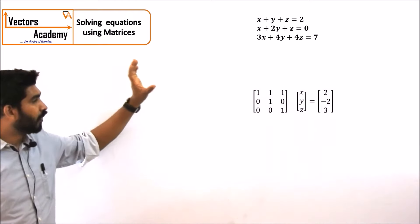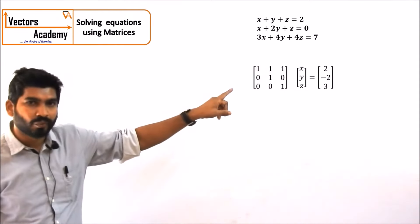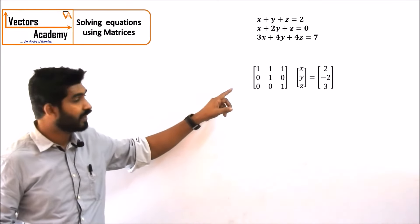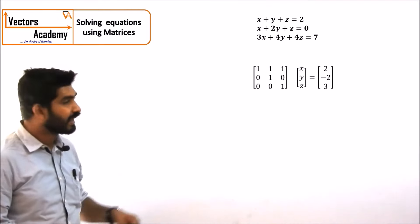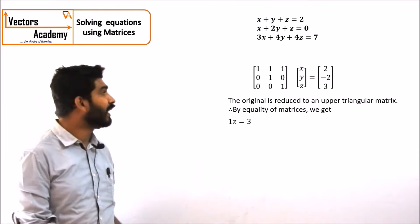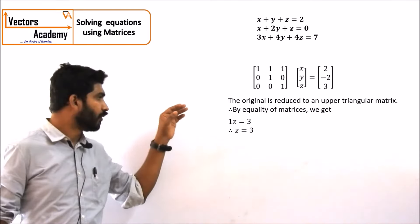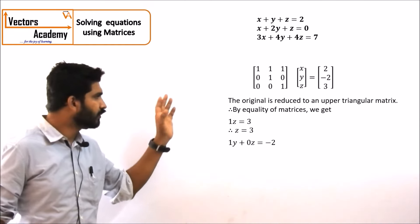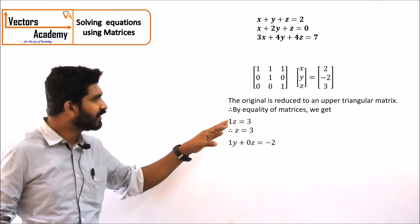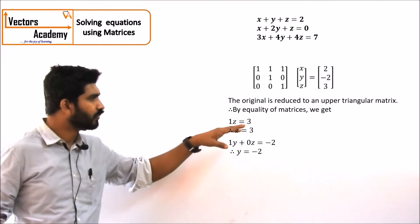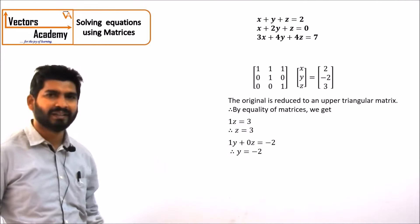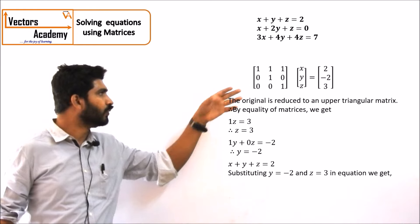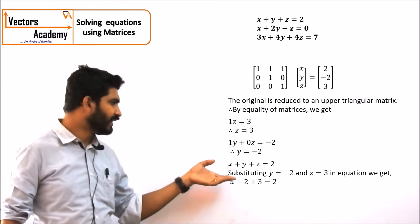Once we get this upper triangular matrix, we start with the last row. In the last row we have two 0s and just one coefficient left — the coefficient of z. So 1·z equals 3, and the value of z comes out to be 3. From the second row, the coefficient of y is 1 and the coefficient of z is 0, so 1·y plus 0·z equals minus 2, giving y equals minus 2. Similarly, the first equation gives x plus y plus z equals 2, and substituting the values of y and z, we get x equals 1.